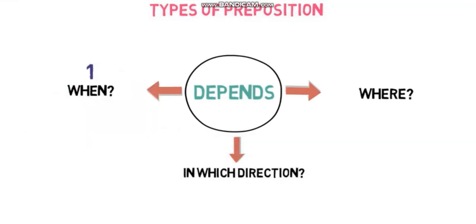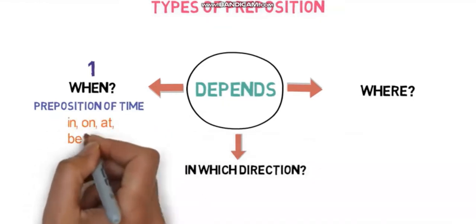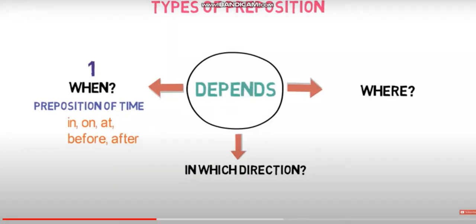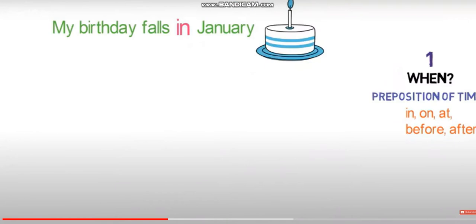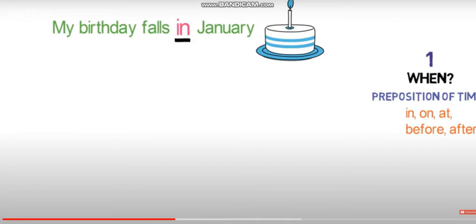Prepositions that describe when an event happened are defined as prepositions of time. Anything which answers the question 'when' shows a preposition of time. Examples are: in, on, at, before, and after. For example, 'my birthday falls in January' — here 'in' is a linking word showing the time when the birthday falls. It answers the question 'when,' so it is a preposition of time.